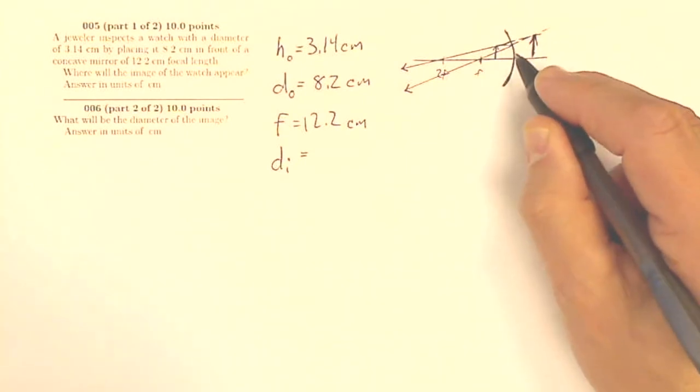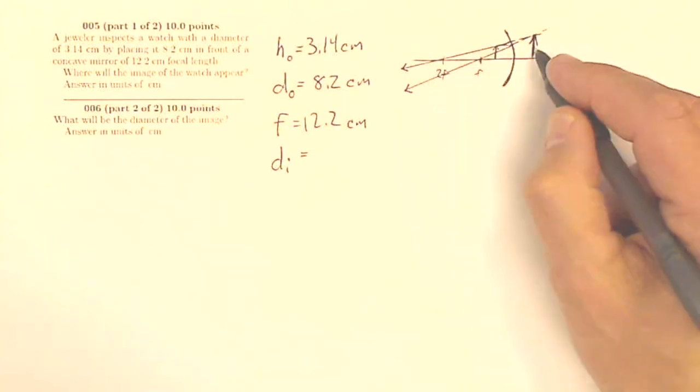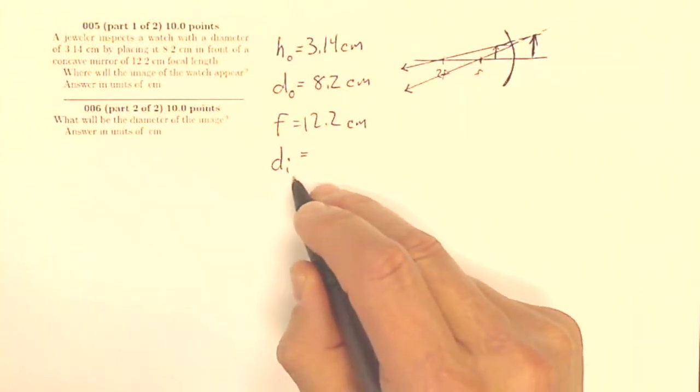So for a mirror, where I would expect a real image to show up over here, I'm getting a virtual image over here. So I know it's going to be a negative number.